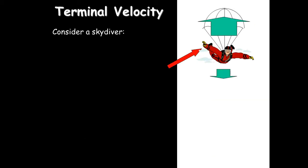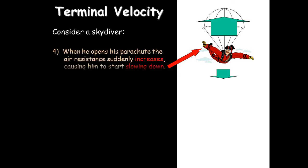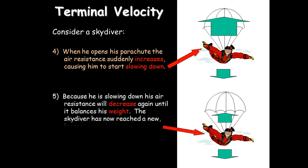He could go faster by tucking in his arms to reduce air resistance. When he pulls his parachute, the large surface area creates massive air resistance. The upward force is now bigger than the downward force, slowing him right down until he reaches another terminal velocity — this time slow enough to land safely.